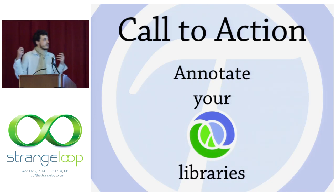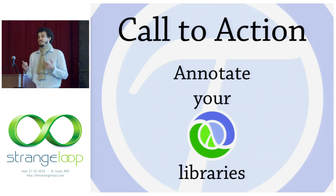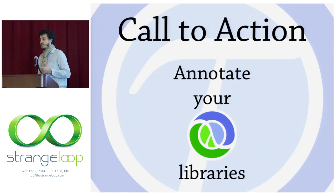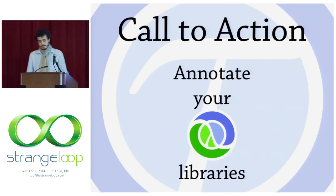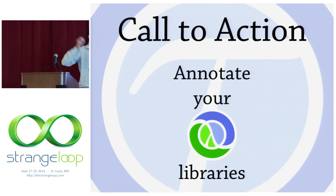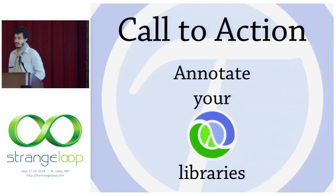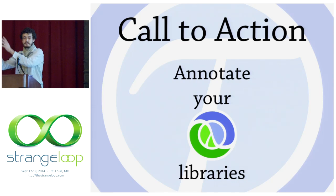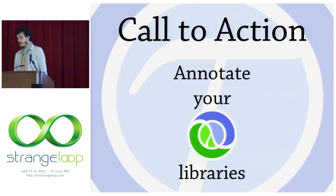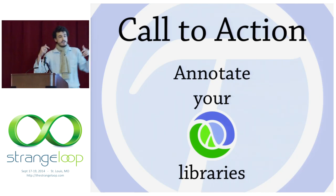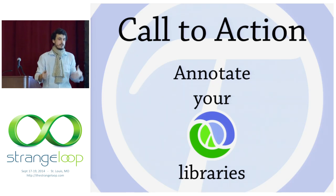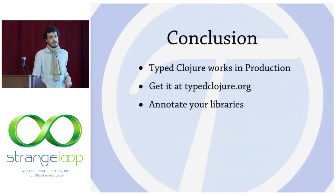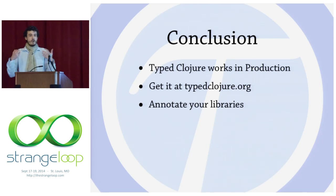Here's a call to action. If you own a Closure library, add type annotations to it so people like CircleCI don't need to do their 20% yak shaving time just to use your library. If you don't have your own library, adopt a library. Find me on IRC or at this conference — I'll tell you my ideas for the best way to annotate your library. It doesn't mean rewriting your application in type closure; it basically amounts to a separate namespace that a type closure programmer would require. In conclusion, type closure works in production — visit typedclojure.org.